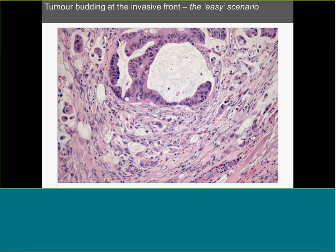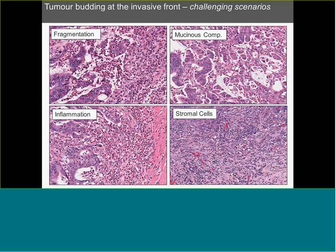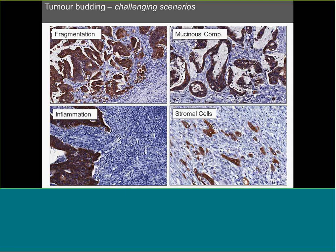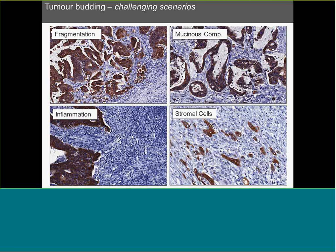In easy scenarios, tumor buds are clearly identifiable at the invasive front. In challenging scenarios — fragmentation, strong desmoplastic component, inflammation at the invasive front, or very prominent stromal cells — the consensus recommendations were to count on H&E. However, we cannot close our eyes to using a cytokeratin stain to guide us in identifying which regions may have tumor budding, then going back to the H&E to count. In an inflammatory component, the cytokeratin stain clearly answers whether there are any malignant cells present.